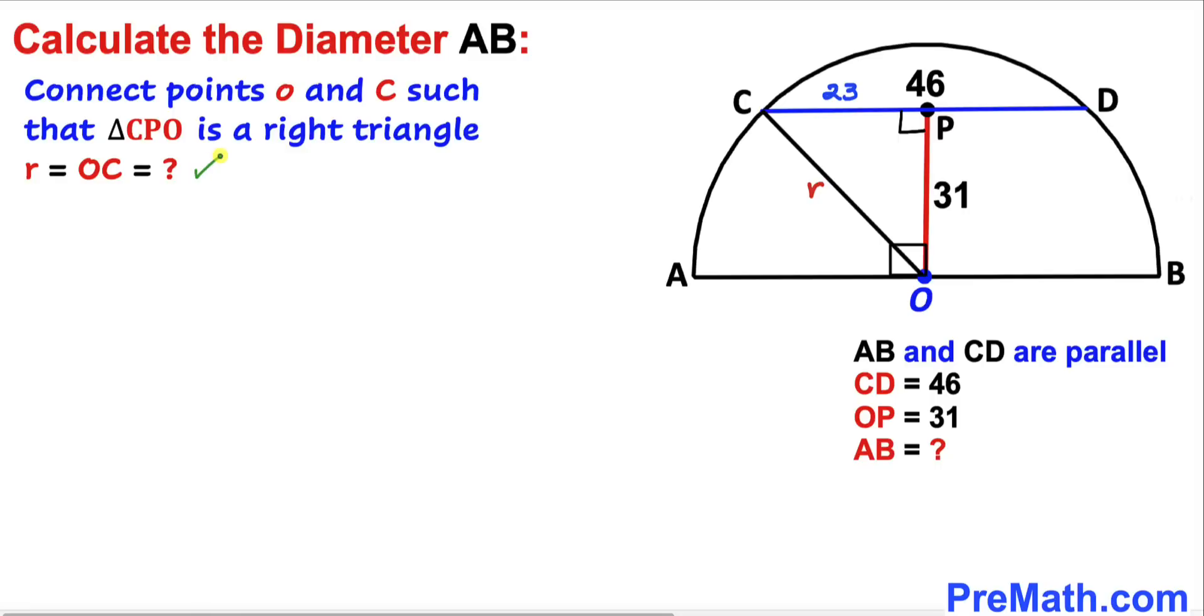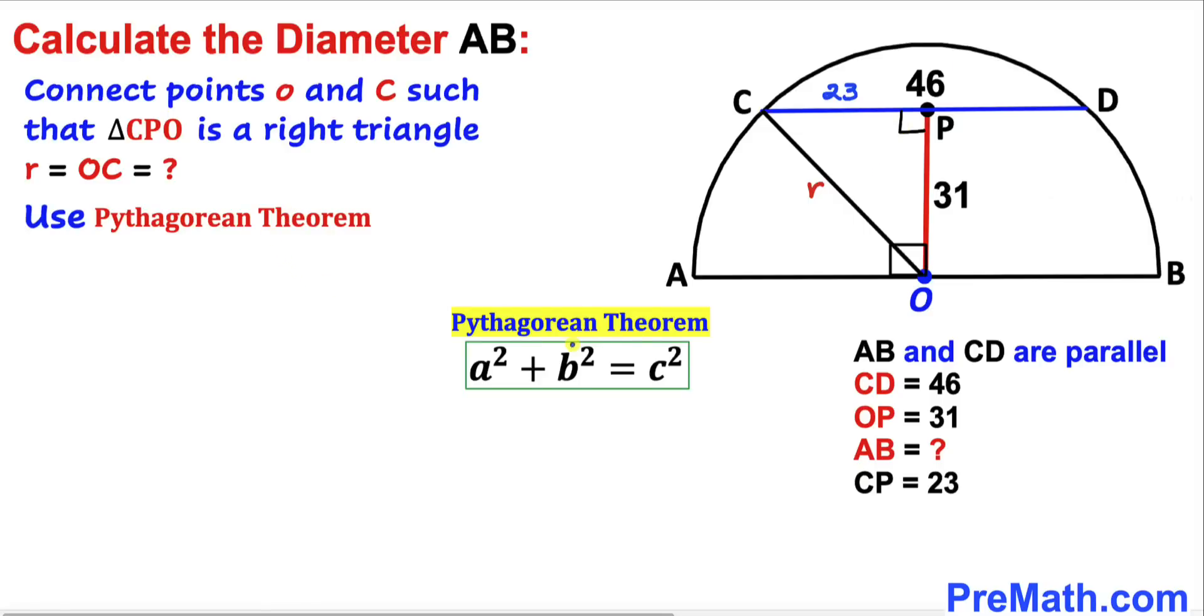We know that triangle CPO is a right triangle, therefore we're going to use the Pythagorean theorem: a² + b² = c². In this right triangle, the longest leg OC is our c, side CP is a, and side OP is b.